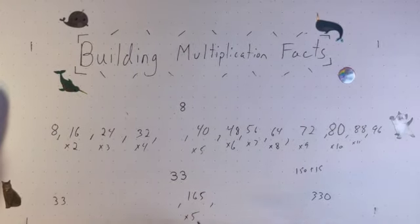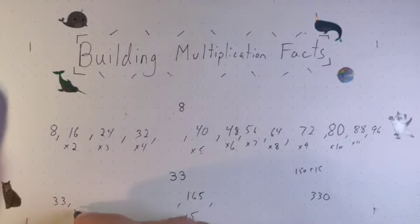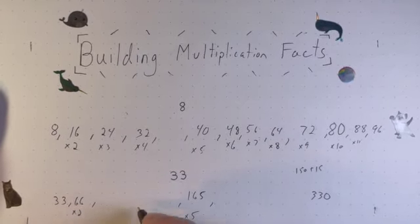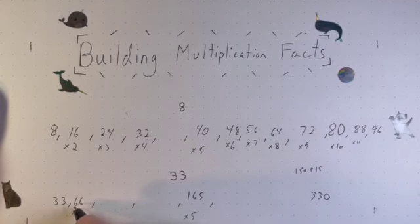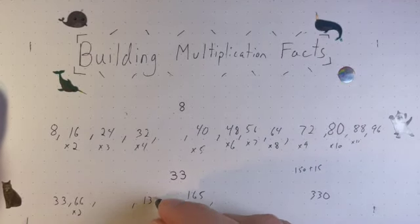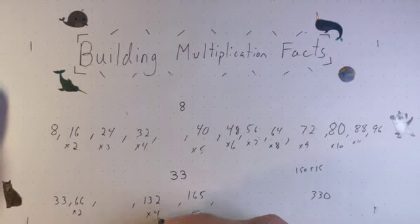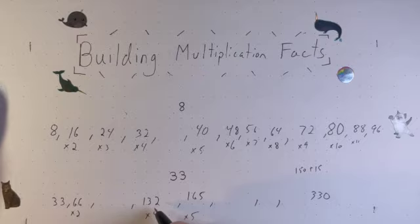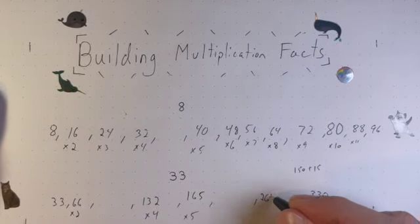From there, I'll start doing some doubles facts. So my times 2 will be 66, because 33 doubled is that, and my times 4 will be 66 doubled, which will be 132. And then I can even go further than that, and my times 8 will be this doubled, which will be 264.